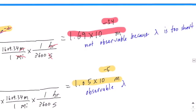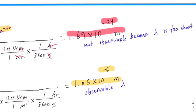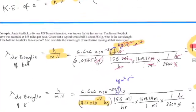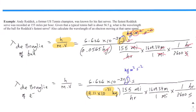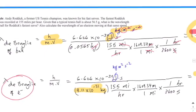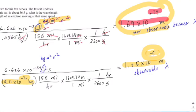Both numbers are small, but the key is that the wavelength for the tennis ball is extremely short — so short it cannot be observed with any instrument we have. However, a value of 10 to the minus 5 meters is within the micrometer region, which is very easily observable with our tools. This shows that as particles get larger, like a tennis ball, the wave property becomes so insignificant it's no longer meaningful. But for really small objects like an electron, the wave property is significant and measurable. Quantum properties are only observable when objects are really small.